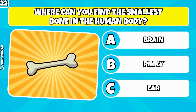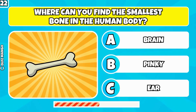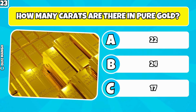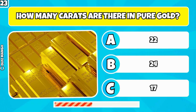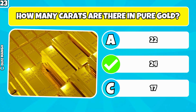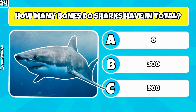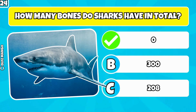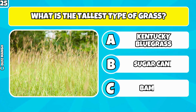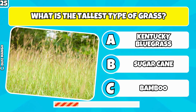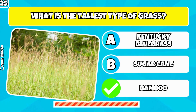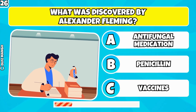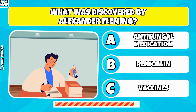Where can you find the smallest bone in the human body? It's in the ear. How many carats are there in pure gold? 24 carats. How many bones do sharks have in total? Sharks have no bones. What is the tallest type of grass? It's bamboo. What was discovered by Alexander Fleming? It was penicillin.